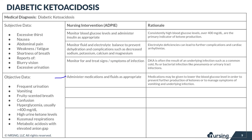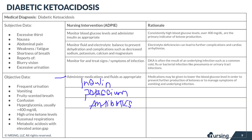Next, you're going to be expecting to administer some medications and fluids as appropriate and as prescribed. Things you should expect to administer include insulin, potassium, and antibiotics. You may also be giving medications to help treat nausea and vomiting, so be on the lookout for that as well.